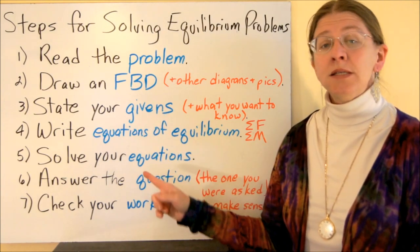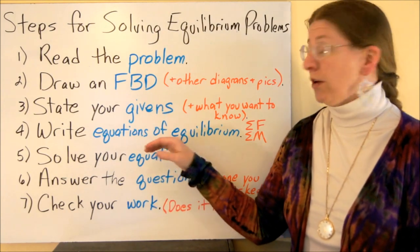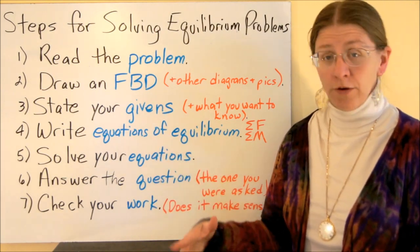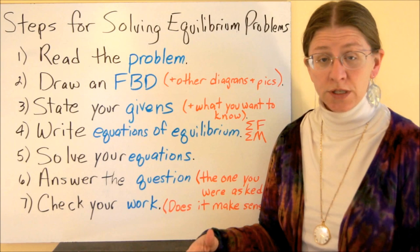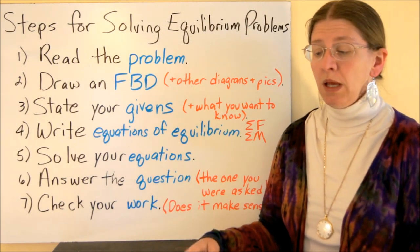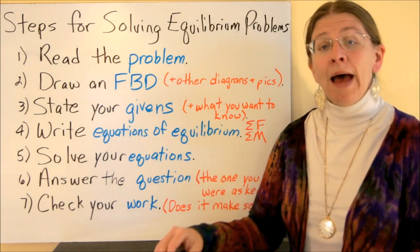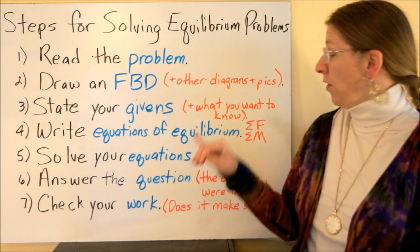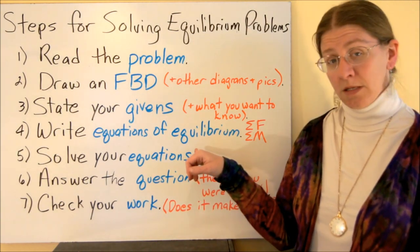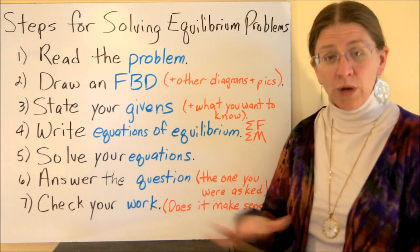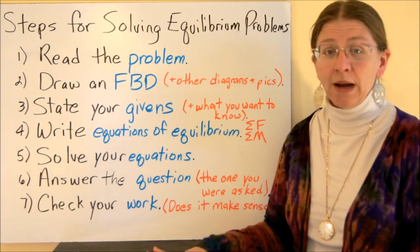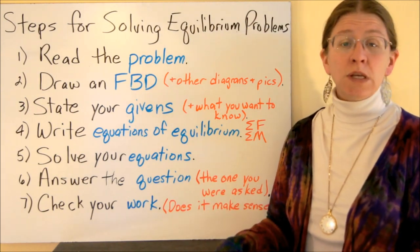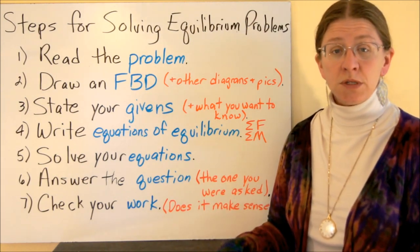Once you have your givens written down, write your equations of equilibrium, or other equations that you're going to solve in the problem. Get in the habit, please, of writing down the formulas in all of their original form — this is where it came from in the book — before you substitute in numbers.